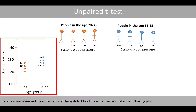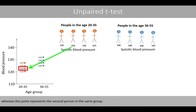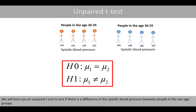Based on our observed measurements of the systolic blood pressure, we can make the following plot. This point represents the systolic blood pressure of the first person in the age group 20 to 35, whereas this point represents the second person in the same group. This point represents the systolic blood pressure of the first person in age group 36 to 55, and so forth. We will use an unpaired t-test to test if there is a difference in the systolic blood pressure between people in the two age groups.